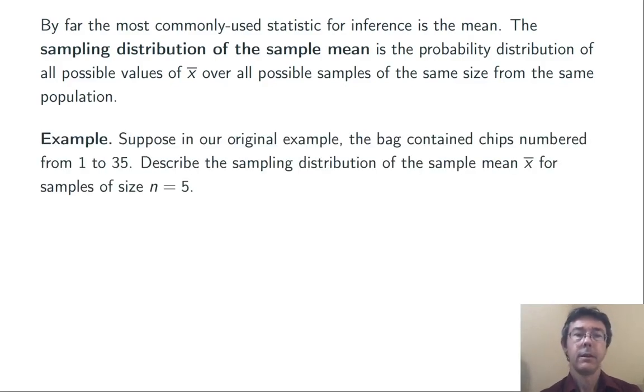Here's an example. Suppose, in our original example, that that bag contained chips that were numbered from 1 to 35, one chip each. Let's describe the sampling distribution of the sample mean, x bar, when we're doing samples of size n equals 5. Here, we'll do the samples without replacement.